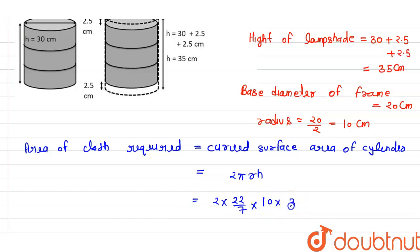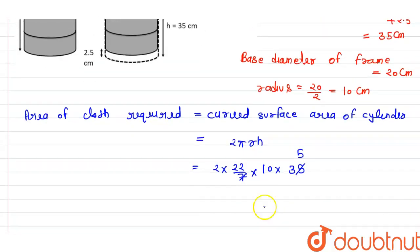When we simplify this, it will be 2200 cm². This is the area of cloth required.